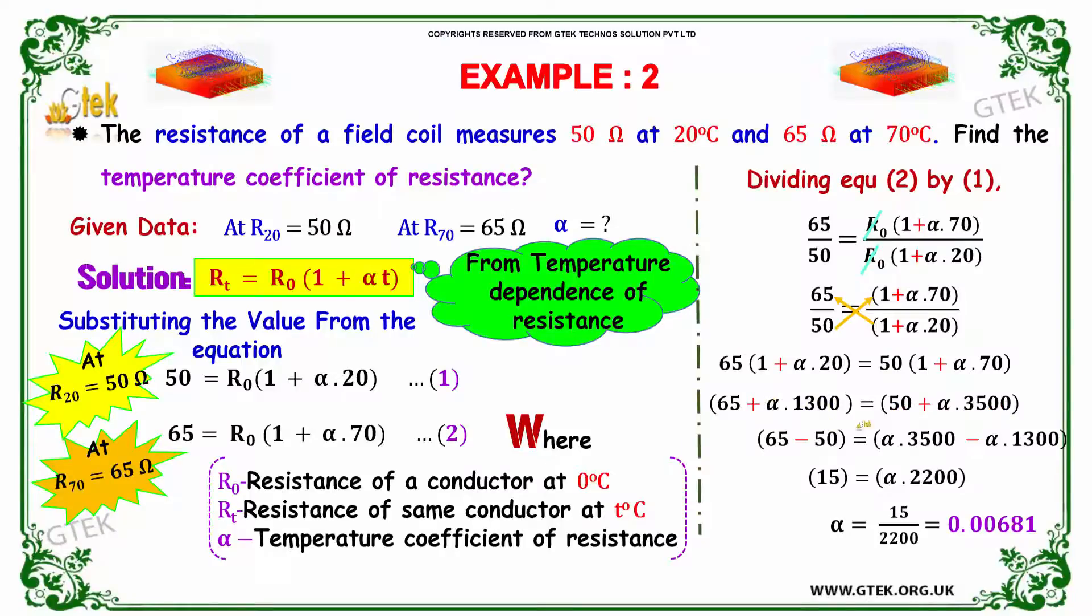So 65, 50 will become minus 50 here, and 1300 alpha comes here minus 1300 alpha. You got 15 is equal to alpha into 2200. So alpha is equal to 15 divided by 2200 is equal to 0.00681.